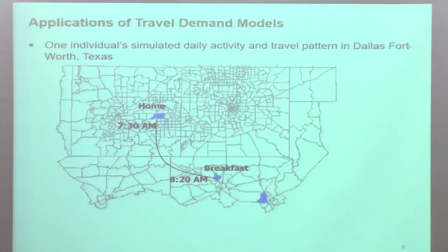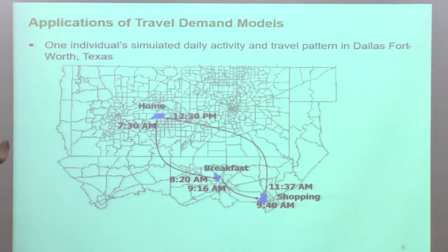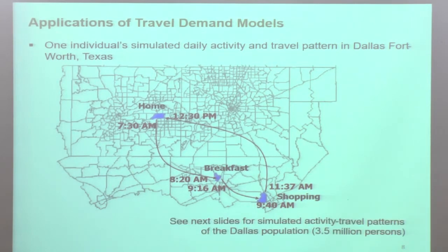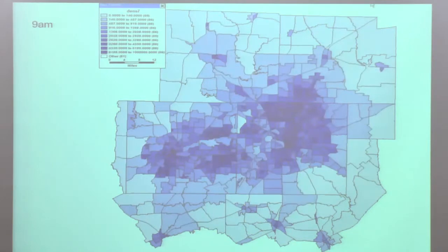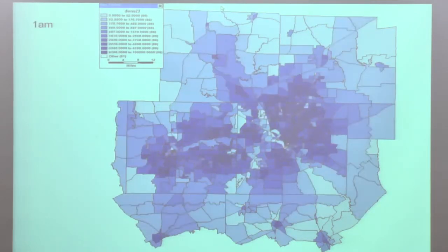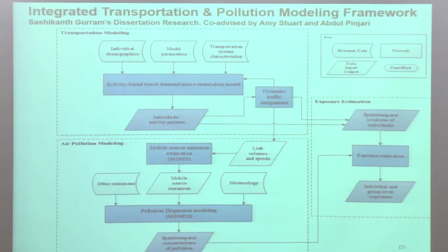Here is a simulated pattern of one individual — Fort Worth on the left side, Dallas on the right side. If we put it all together for the whole city and all people, we can start looking at spatial temporal movements of population over time and space, which will be useful for a lot of purposes. I'll also showcase some work in the context of Tampa, Florida, bringing together transport models and air pollution models.